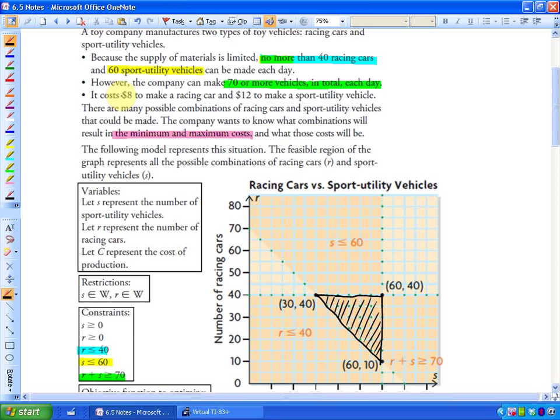The next bullet says this: it costs $8 to make a racing car and $12 to make a sport utility vehicle. There are many possible combinations of racing cars and sport utility vehicles that could be made as evidenced here. This represents many combinations. The company wants to know what combinations will result in the minimum and maximum costs. So they're trying to minimize or maximize the cost and that has to do with the objective function. Their objective is to maximize or minimize the cost, so that's their objective.